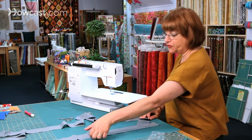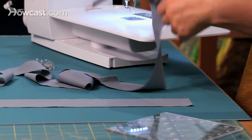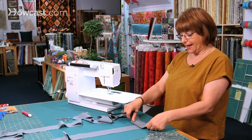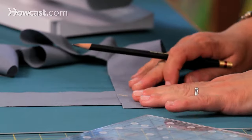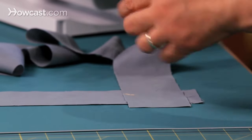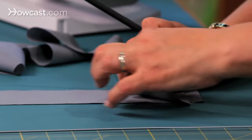You take your first strip, lay it on your mat, second strip, 90 degree angle, put it across. The fabrics should be right sides together.